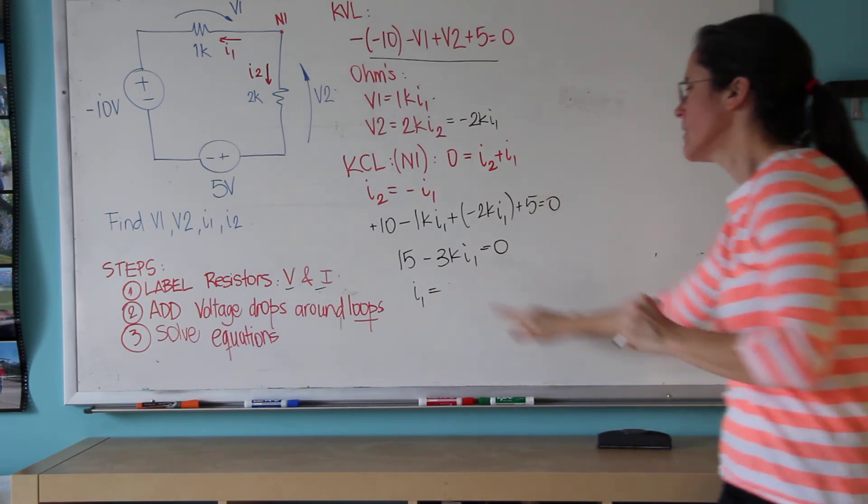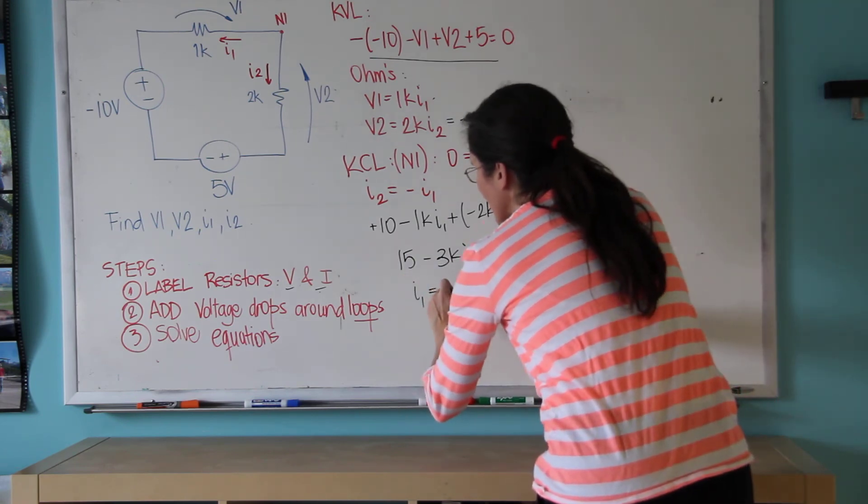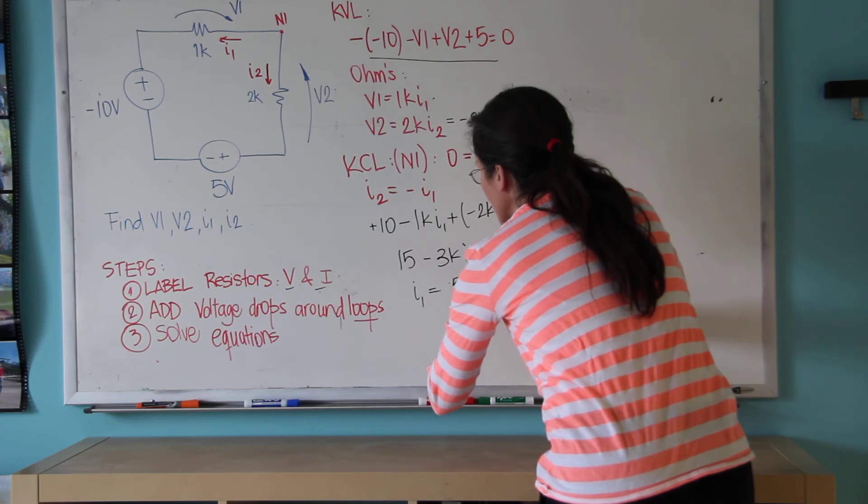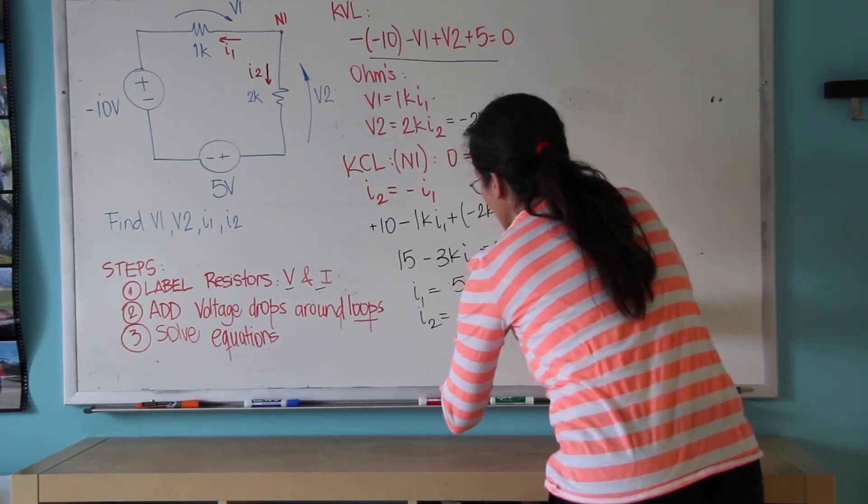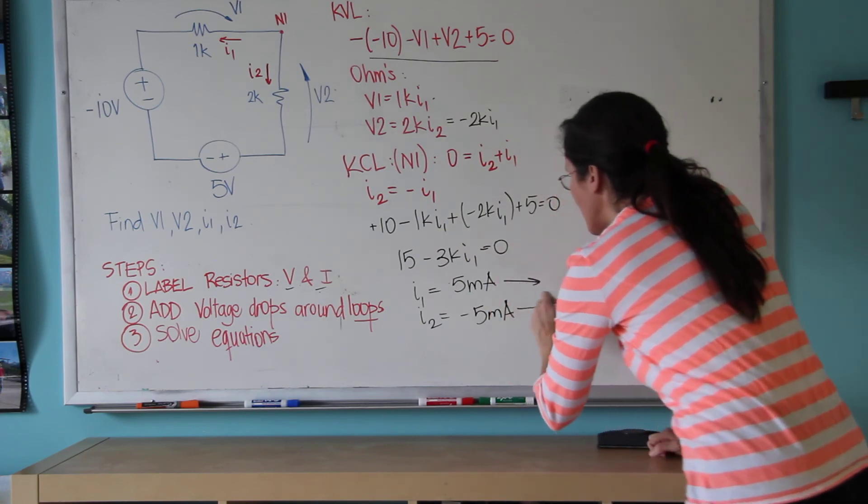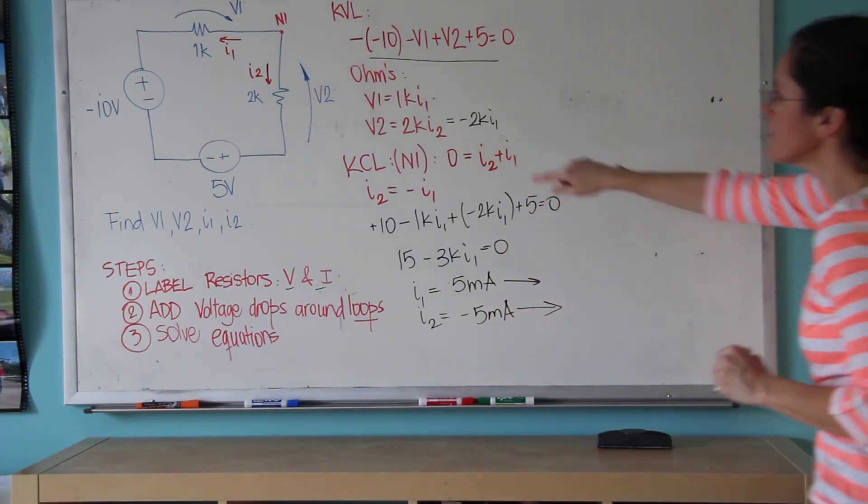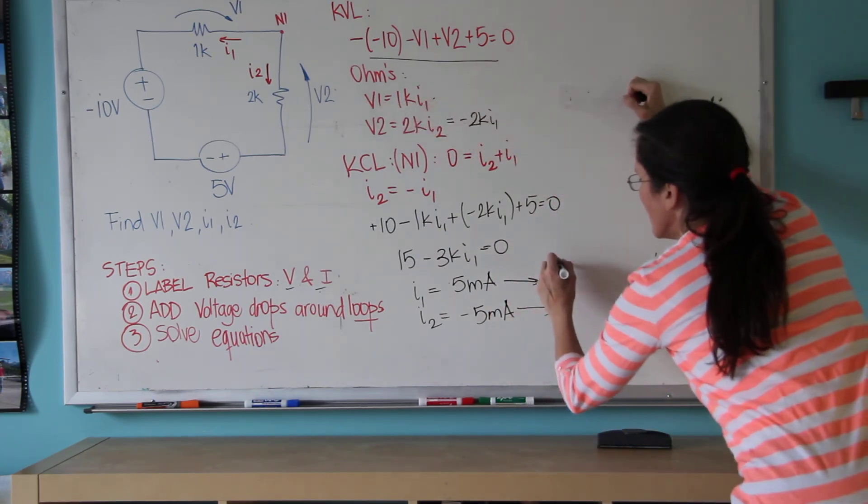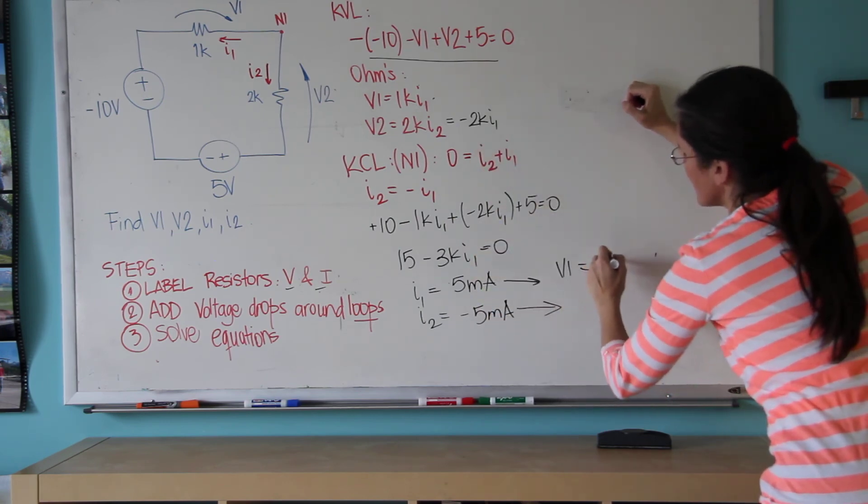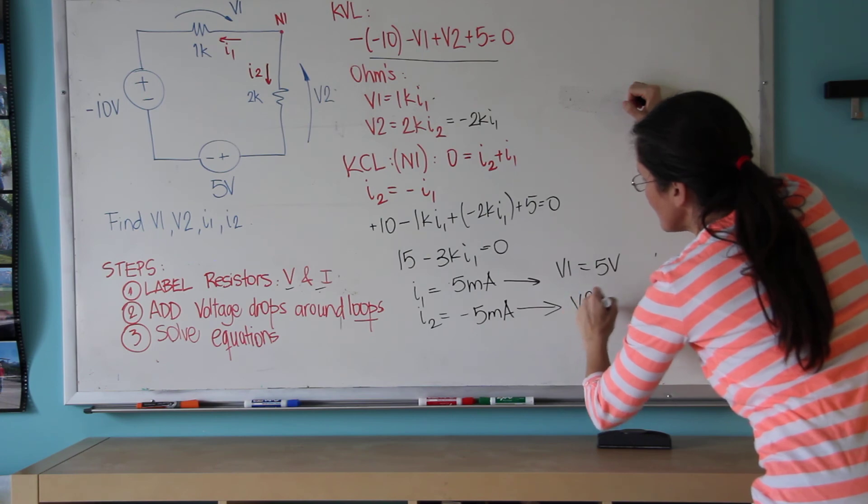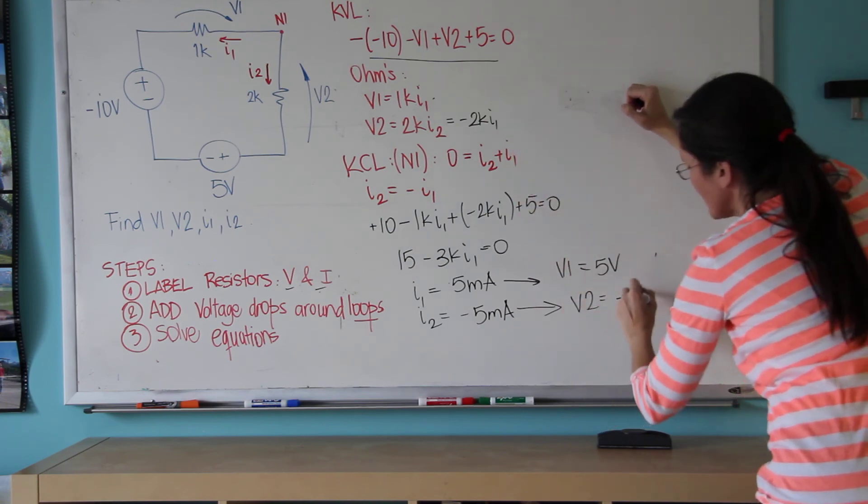And therefore, I1 is going to be 15 divided by 3, 5 milliamps. I2 is minus 5. And from here I can get both V1 and V2. V1 equals 5 volts and V2 equals minus 10 volts.